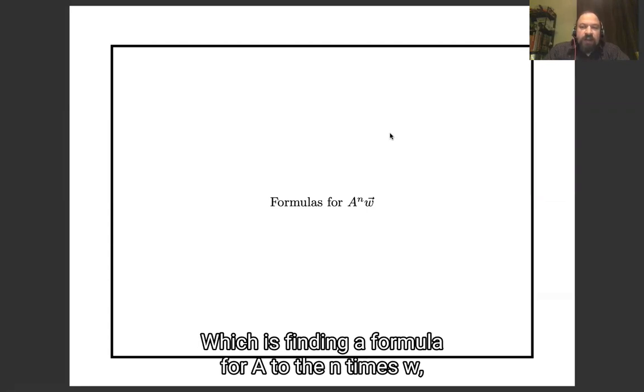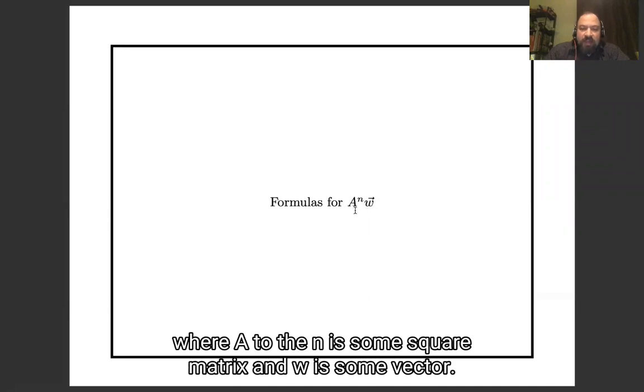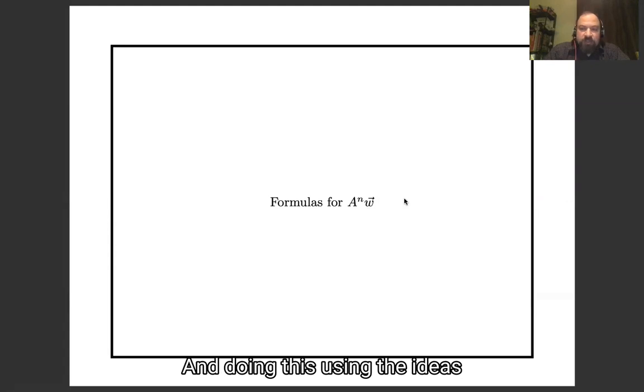Finding a formula for A to the n times w, where A to the n is some square matrix and w is some vector, and doing this using the ideas of eigenvectors and eigenvalues.